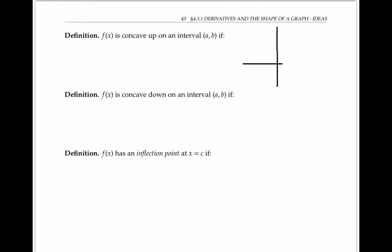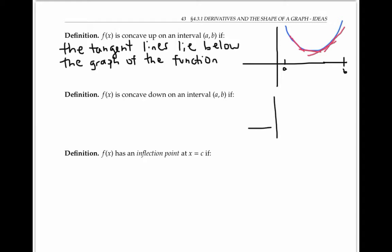We say that a function is concave up on an interval from a to b if, informally, it looks like a bowl that could hold water on that interval. More formally, a function is concave up if all the tangent lines for the function on that interval lie below the graph of the function. The function is concave down on the interval from a to b if informally the graph looks like a bowl that would spill water, or more formally, if the tangent lines on that interval all lie above the graph of the function.